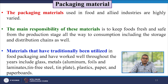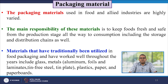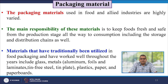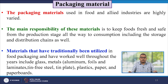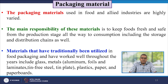Let us talk about packaging materials. The packaging materials used in the food and allied industries are highly varied. There are many packaging materials available to wrap or package food material. The main responsibility of these materials is to keep food fresh and safe from the production stage all the way to consumption, including storage and distribution chains, and they must restore original condition without decomposing or deforming.